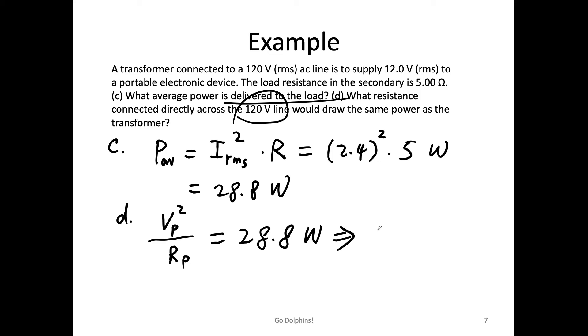So it's V_P squared, and V_P is 120 squared, divided by 28.8 watts, which should have given me 500 Ω.